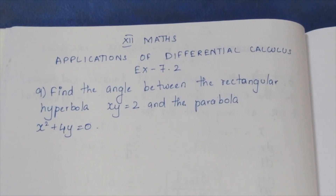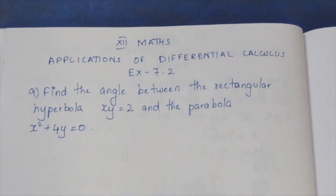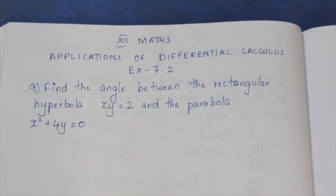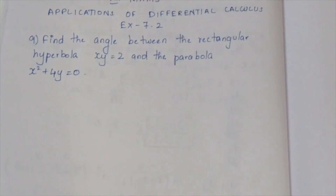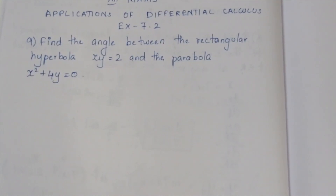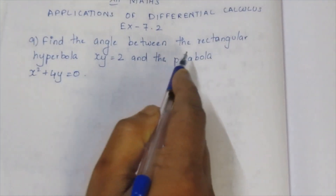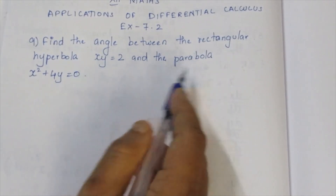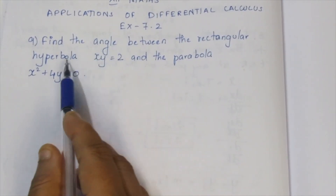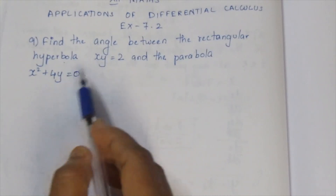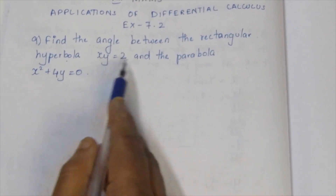Hello viewers, I am Mike Lee. This is 12th standard applications of differential calculus, Exercise 7.2, 9th sum. We need to find the angle between the rectangular hyperbola and the parabola.